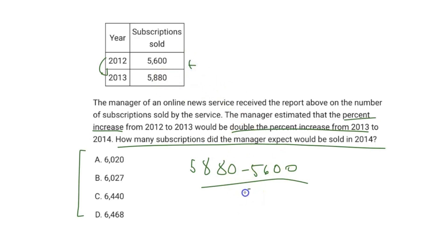In math it would be new minus old over old. What we have here is 280 over 5,600 which is going to be 0.05, so that is the equivalent of a 5% increase.